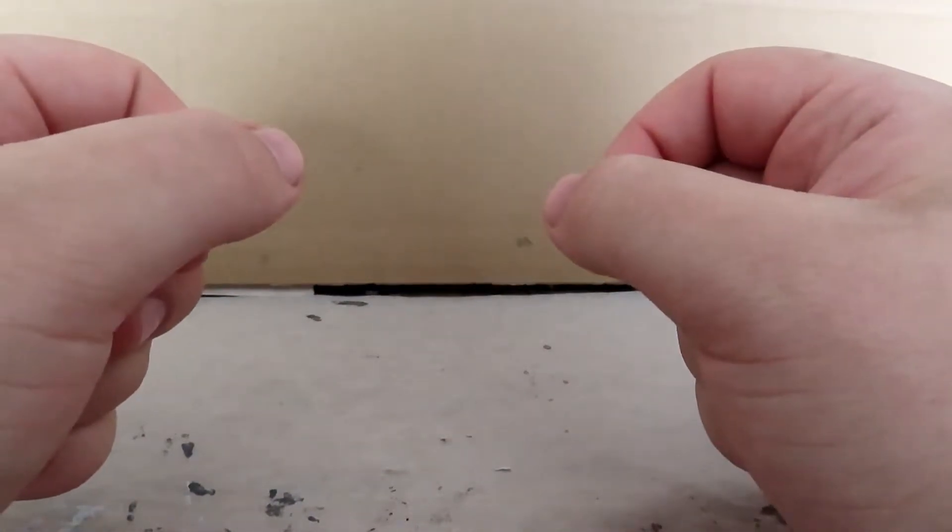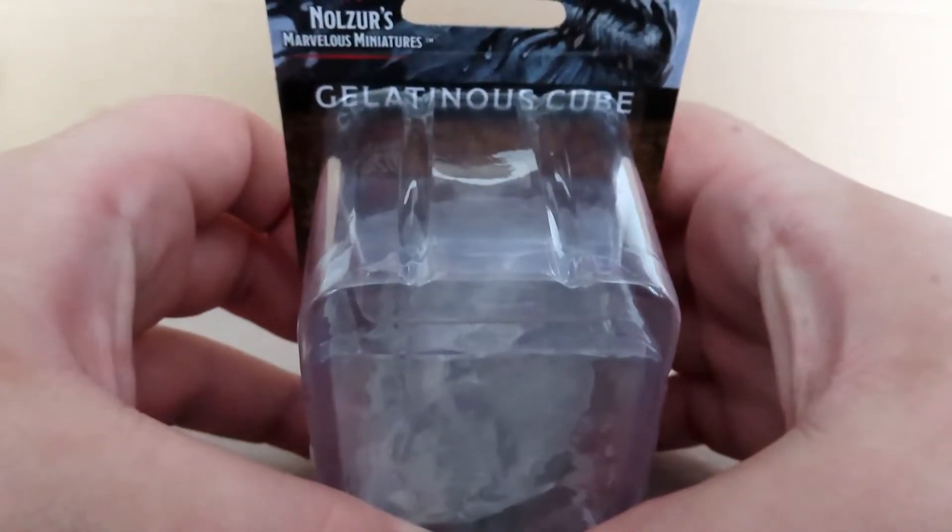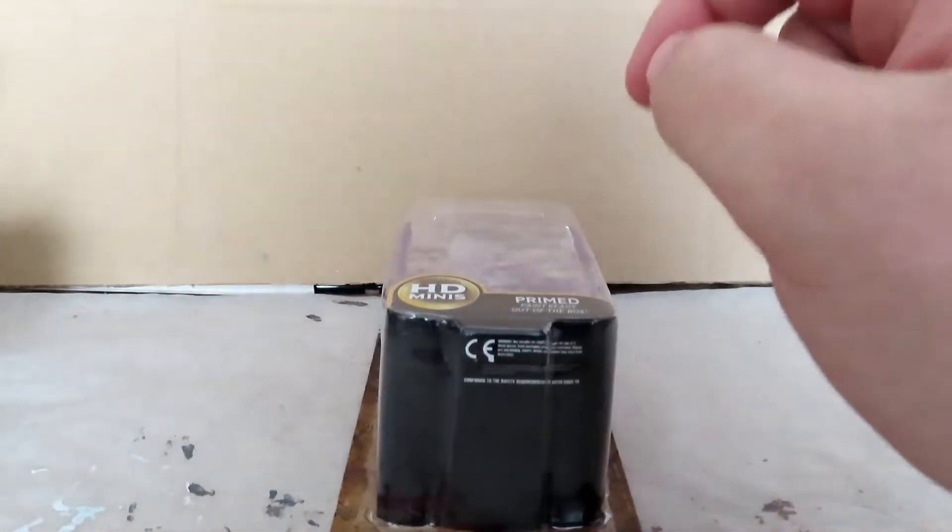Hello YouTube, I'm Michael from Runestorm and today we're going to be doing a paint job of a miniature that I have received, called the Gelatinous Cube from Nolzur's Marvelous Miniatures, one of my favorite monsters from D&D.